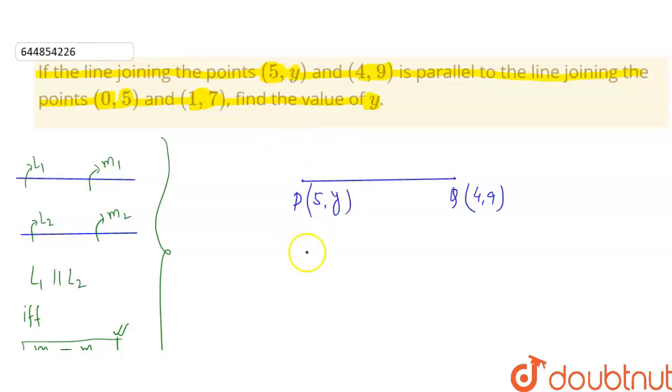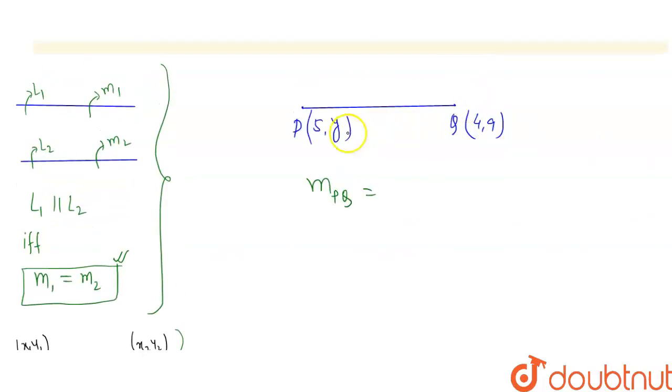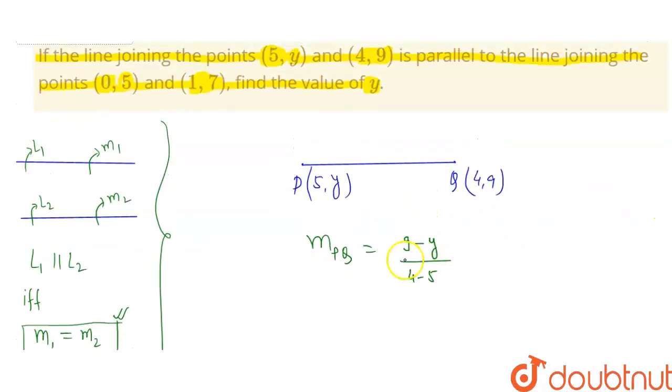Slope of PQ will be what? We will use this formula: y2 minus y1 upon x2 minus x1. That means 9 minus y upon 4 minus 5. Now this will be 9 minus y upon -1, or you can say y minus 9. This will be the slope of PQ.